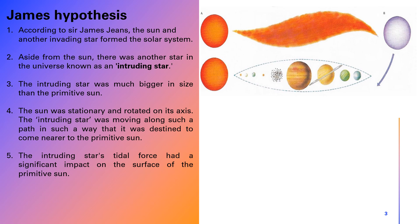According to Sir James Jeans, there were two stars in the universe: our primitive sun and an intruding star. The size of the intruding star was much bigger than the primitive sun, so its gravitational force was also greater. The sun was stationary, rotating on its axis, while the intruding star was moving towards the sun.